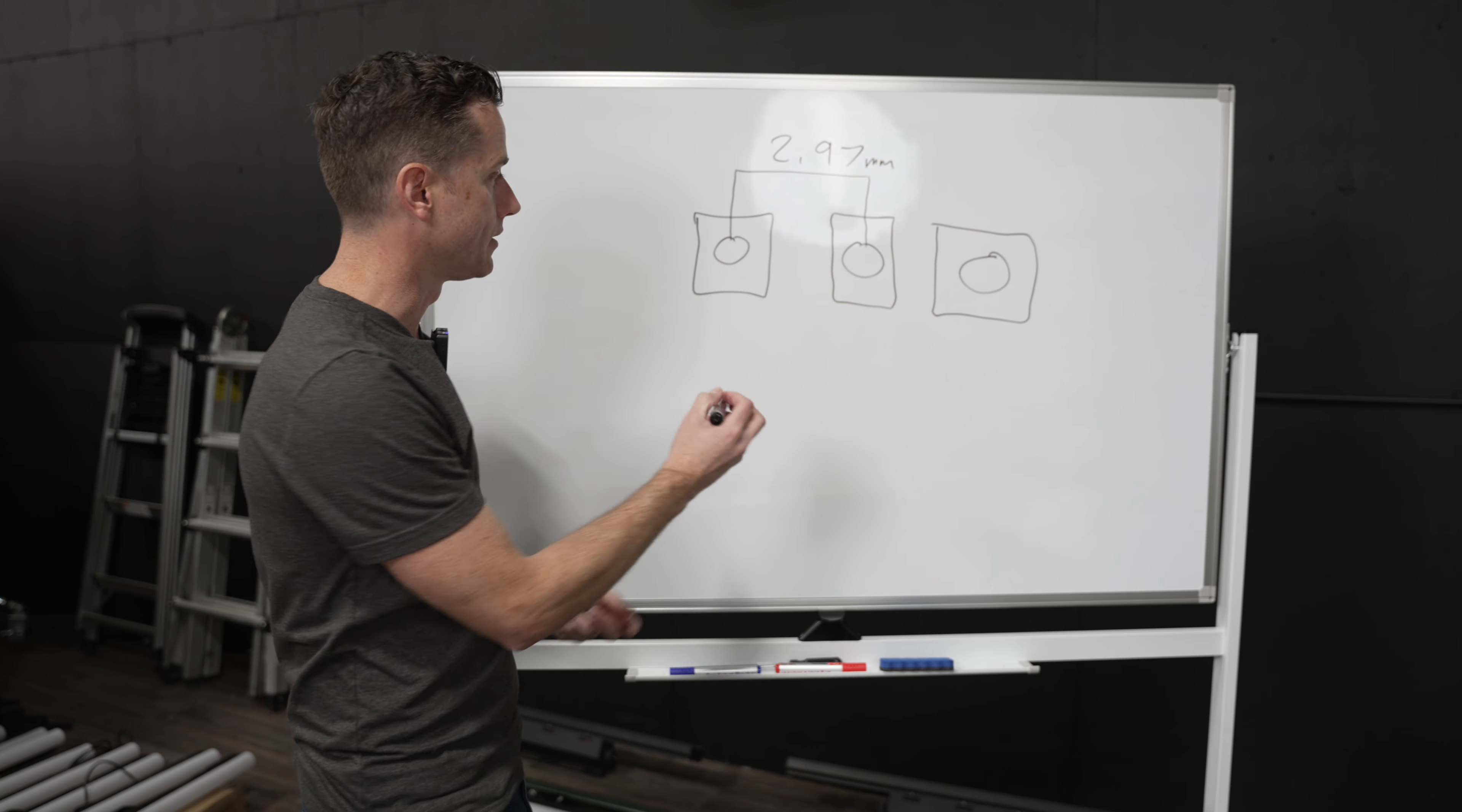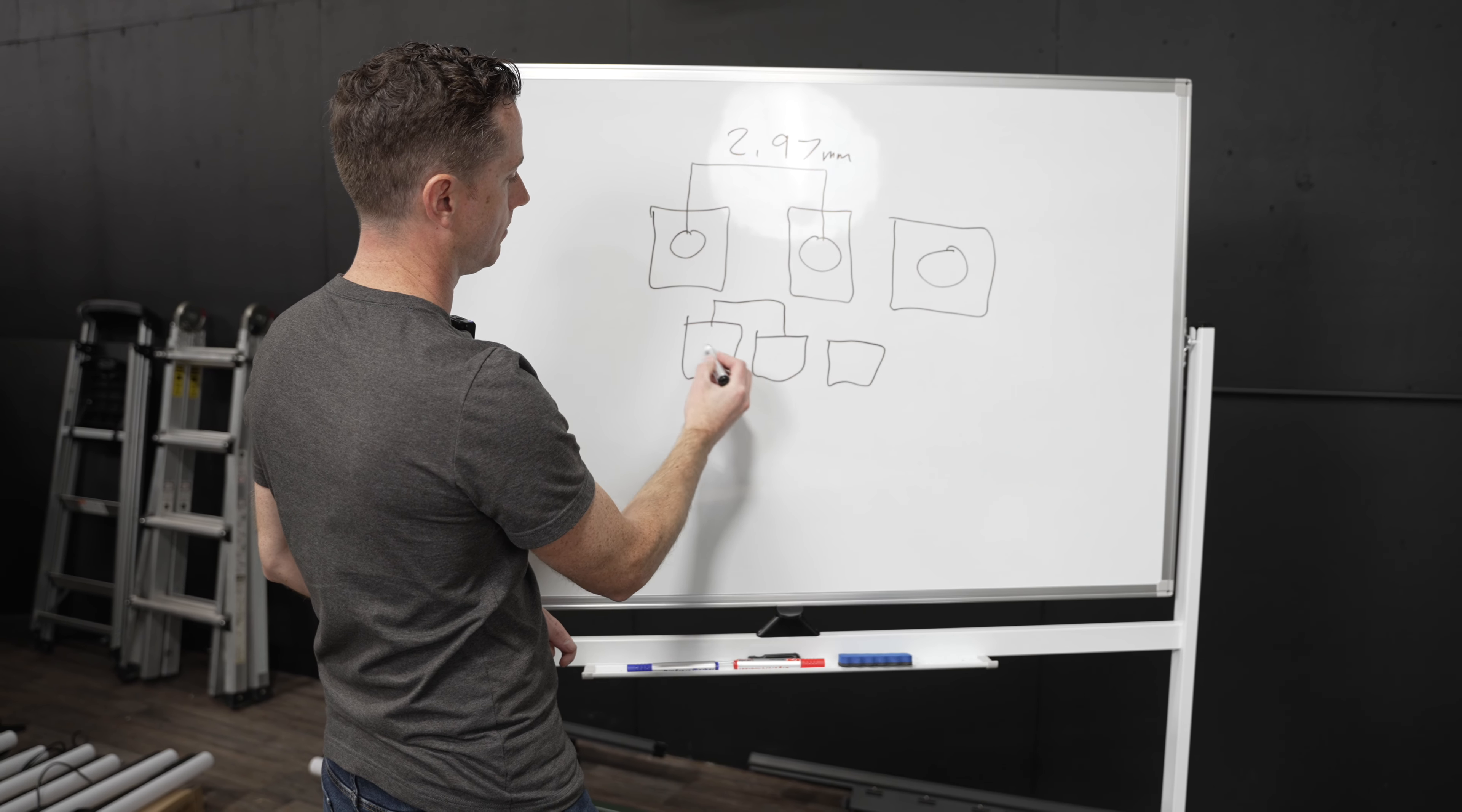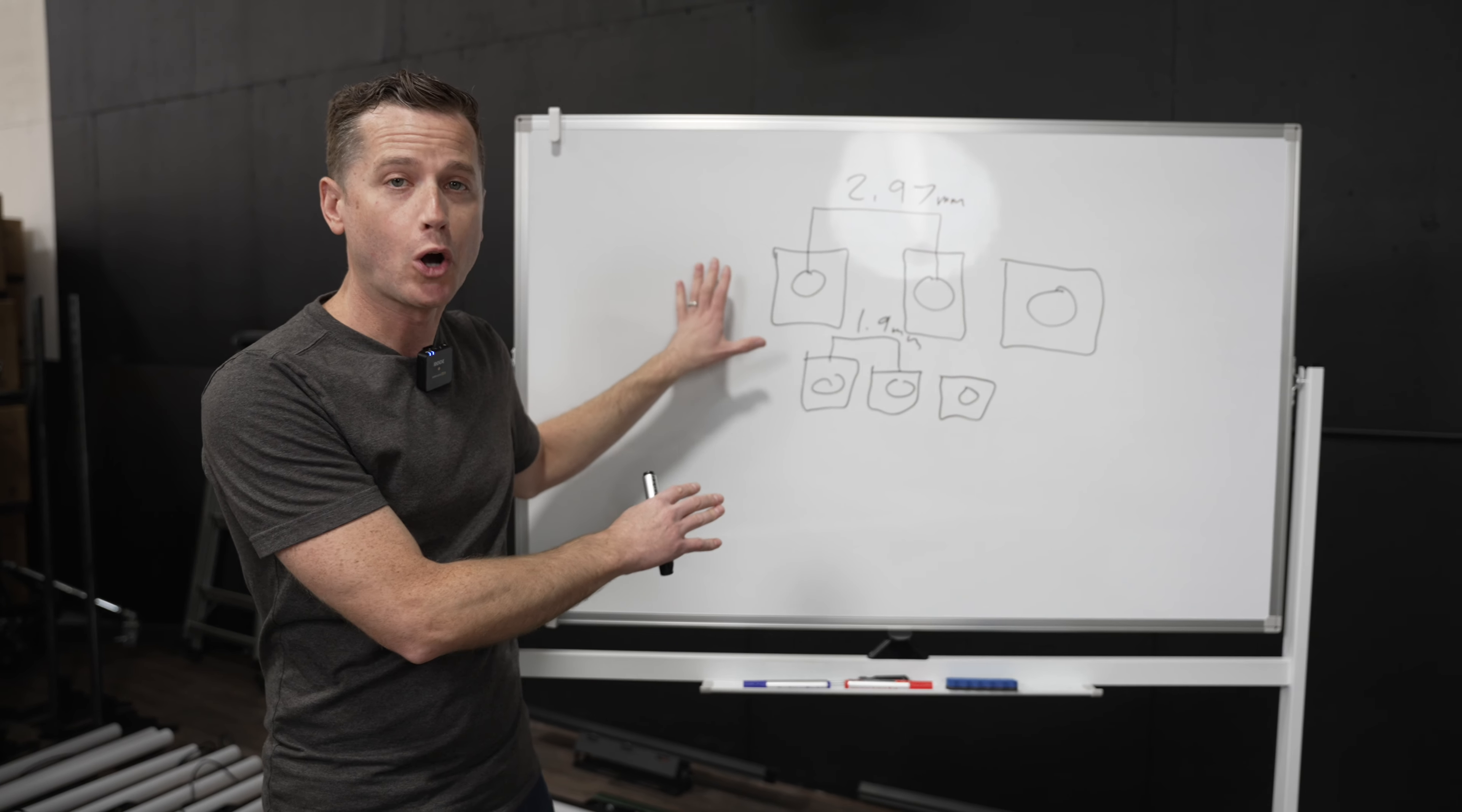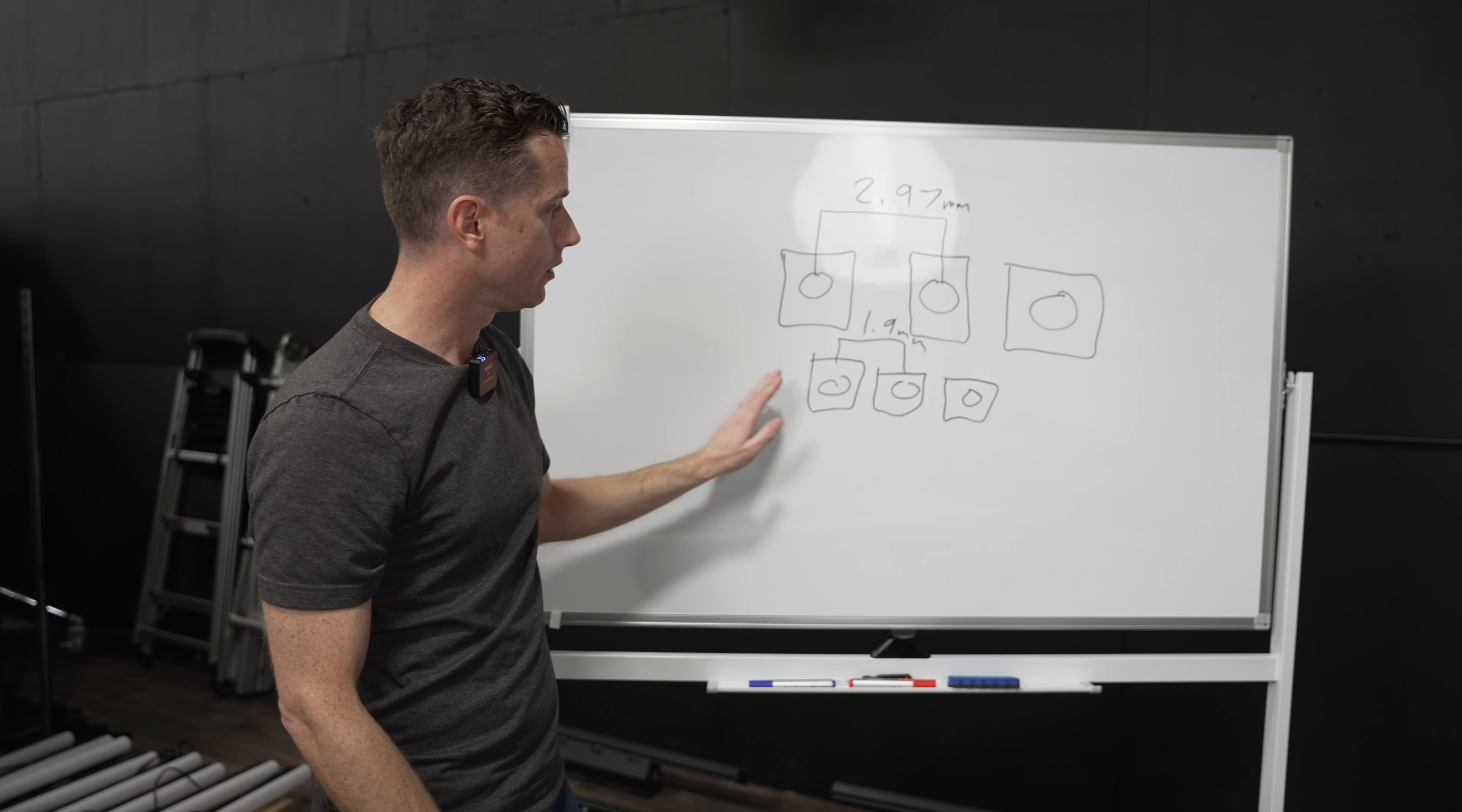Or if you go higher density, so maybe we have more closer together, this distance between these chips is going to be 1.9.